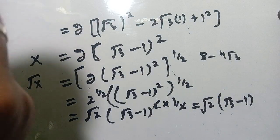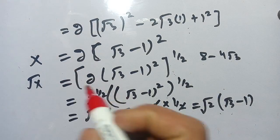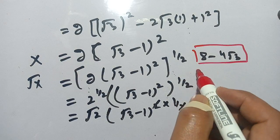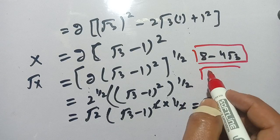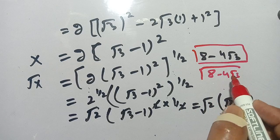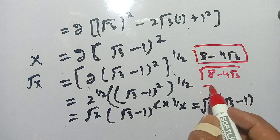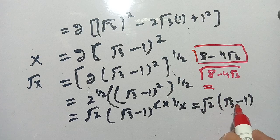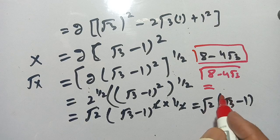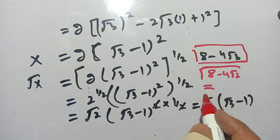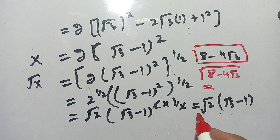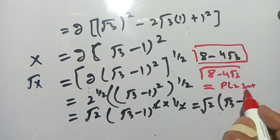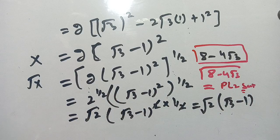This is our final answer for today's problem: square root of (8 minus 4 square root 3) equals square root 2 times (square root 3 minus 1). If you are new here, make sure to subscribe to our channel for more math videos. See you in the next video — goodbye!